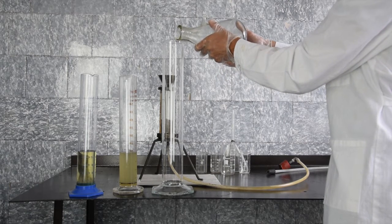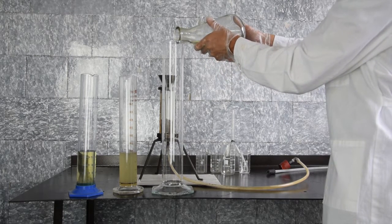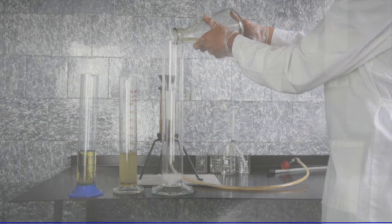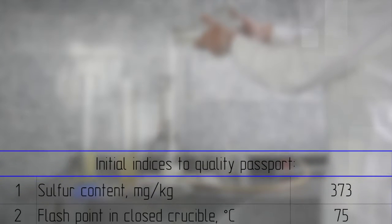Then the precipitation and filtration is done in UVR fuel oil cleaning system. Technical characteristics of diesel fuel according to the quality passport: sulfur content 373 mg per kg, flash point at 75 degrees.